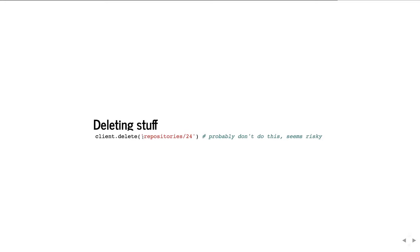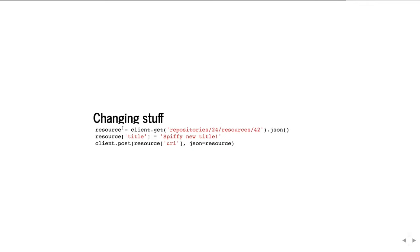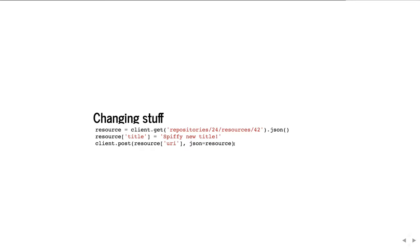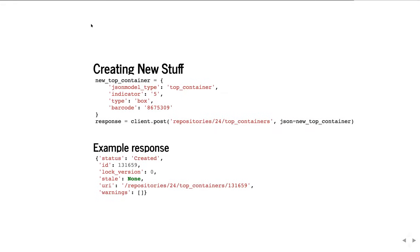If you want to delete things, you just do client.delete() and that'll send a delete request — probably don't want to delete your biggest repository. To change stuff, you get the resource, change whatever you want inside it, and then post it back to the resource's URI. You use the URI from the resource as the URI to post to, and pass in the resource in the json argument, which serializes whatever object you give it as JSON in the body of the request.